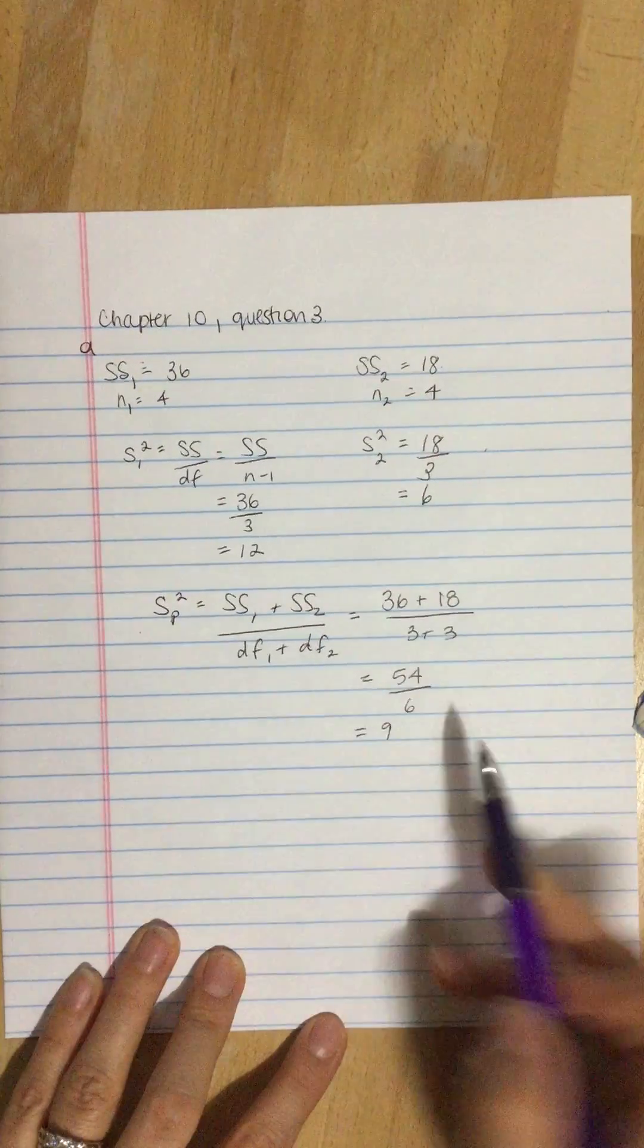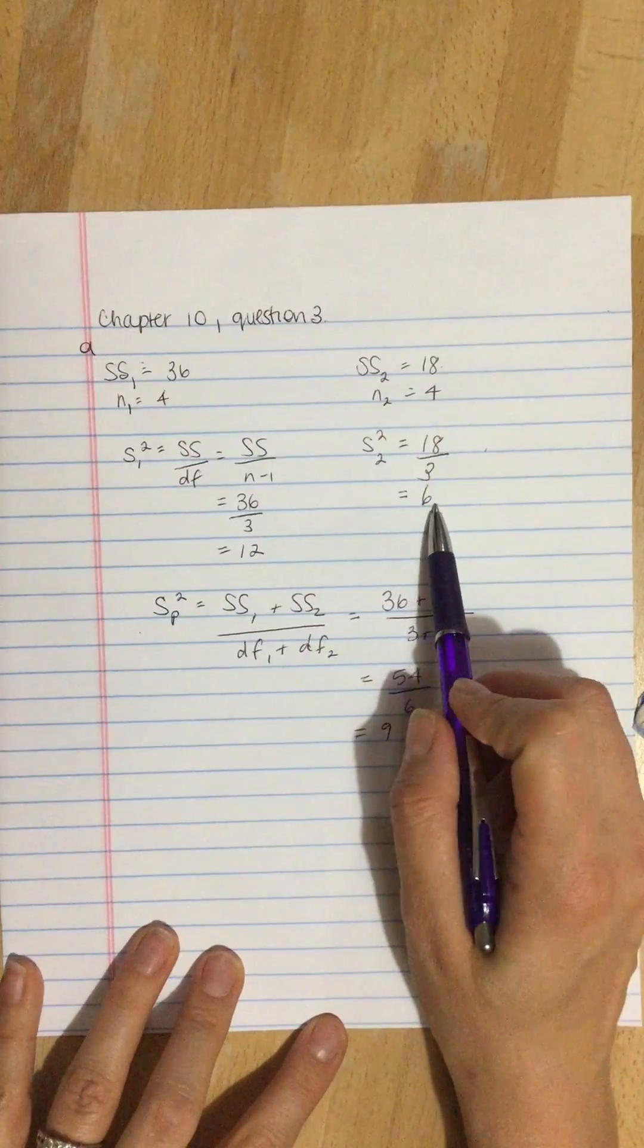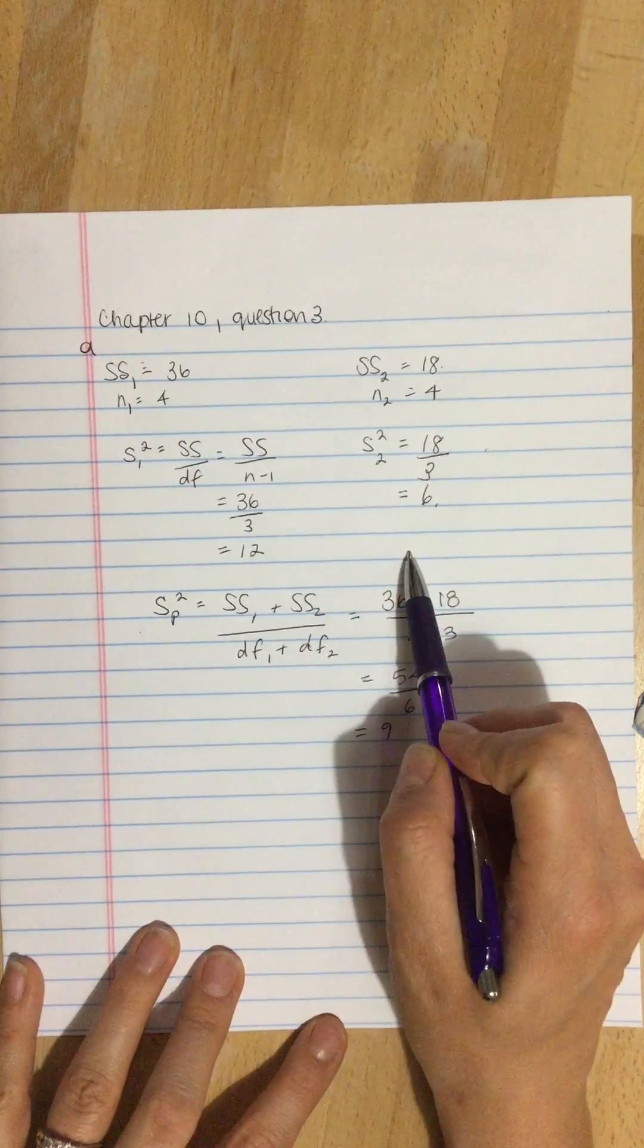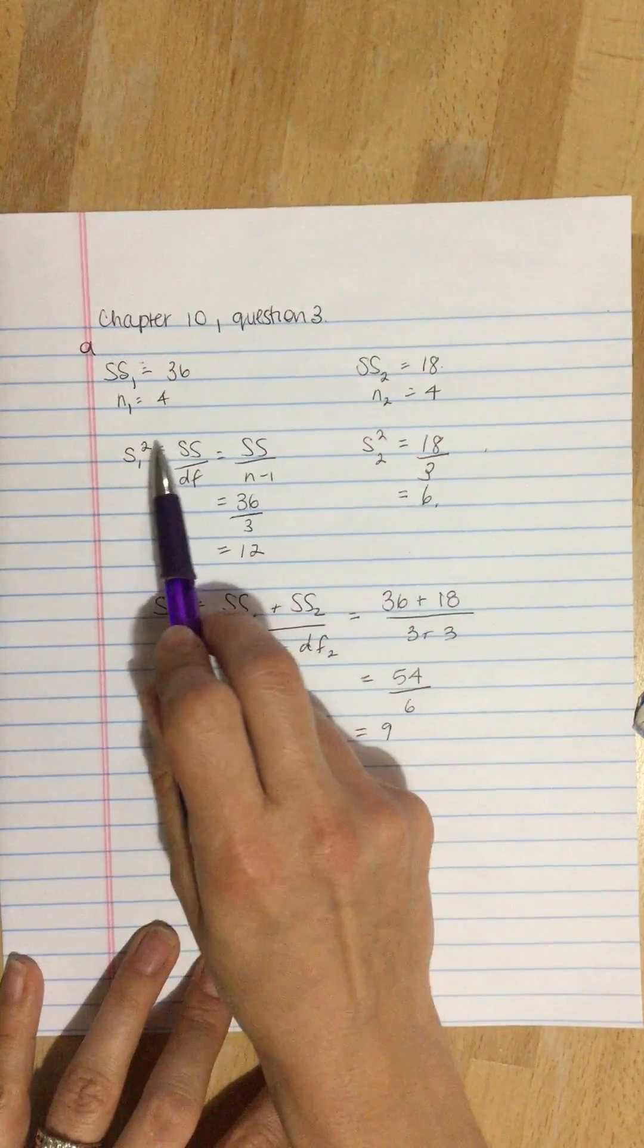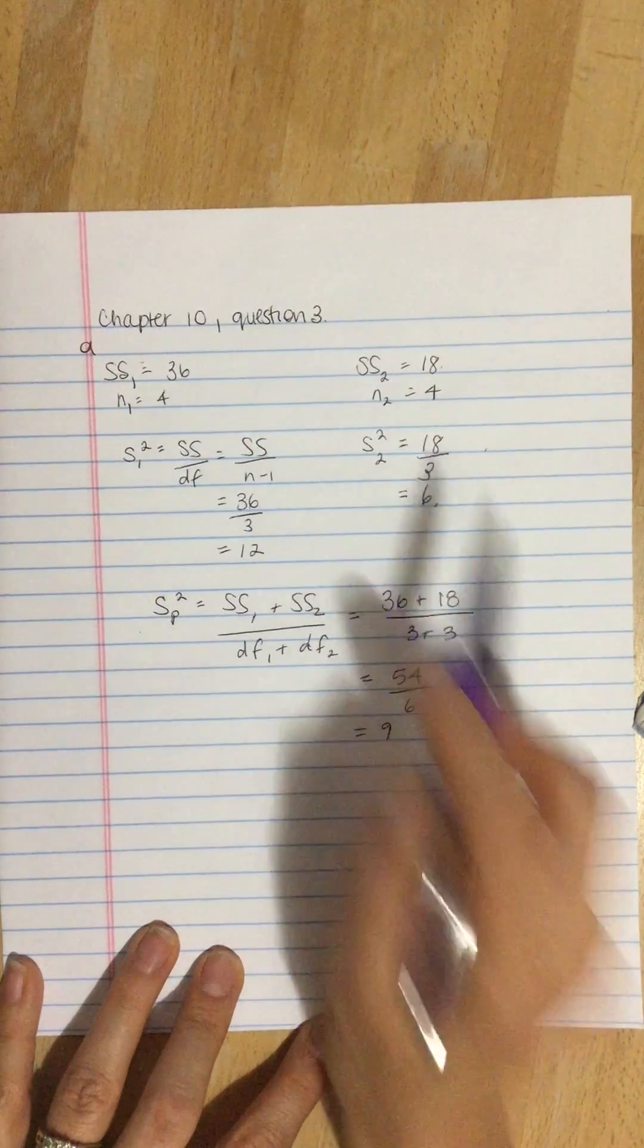And sure enough, that is halfway between 12 and 6, which is what we expect and what we should get, given that the sample sizes are the same.